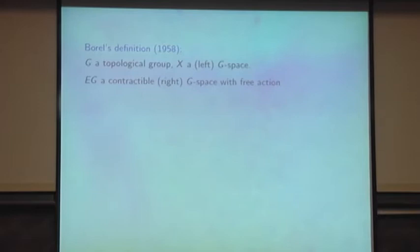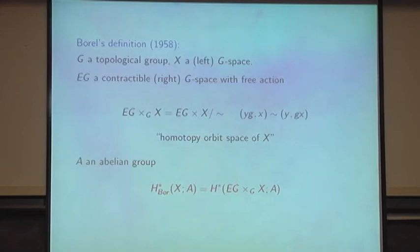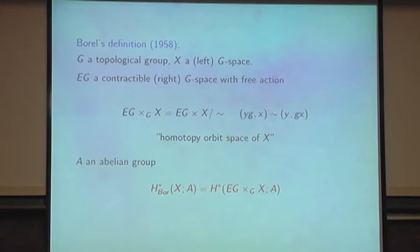Here's Borel's definition, 1958. Take a topological group, a left G-space. Take a free contractible right G-space. Form the balanced product — the orbit space, if you like, thinking of it in terms of diagonal action. That's called the homotopy orbit space of your G-space X. Take an abelian group and take non-equivariant cohomology of the orbit space. That is the definition of Borel cohomology. It's a very beautiful theory with lots of applications in representation theory, algebraic geometry, and differential geometry.